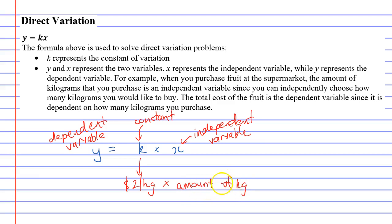We would multiply that by the amount of kilograms we purchased, whether you buy 3 kilograms or 4 kilograms. And then, once you multiply them two together, that gave you the total cost for the fruit that you purchased.